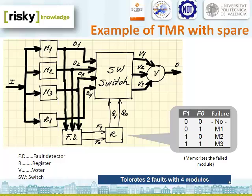These three modules work as a TMR system. The final output signal O in the slide is generated by the voter B using the output signals generated by each one of the modules. Before the voter does its work, the modules' outputs are connected to a switch. This switch will reconfigure the system in the case one working module fails. In this case, the spare module called R1 in the slide will substitute the failing module. There also exists a fault detector called FD that generates two error signals, F0 and F1.